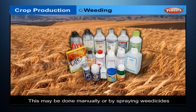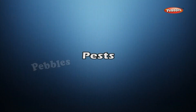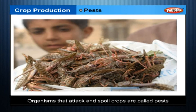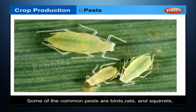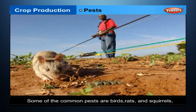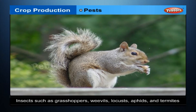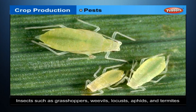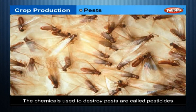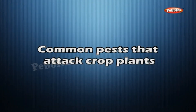Weeding may be done manually or by spraying weedicides. Pests: organisms that attack and spoil crops are called pests. Some of the commonly occurring pests are birds, rats and squirrels, and insects such as grasshoppers, weevils, locusts, aphids and termites. The chemicals used to destroy pests are called pesticides.